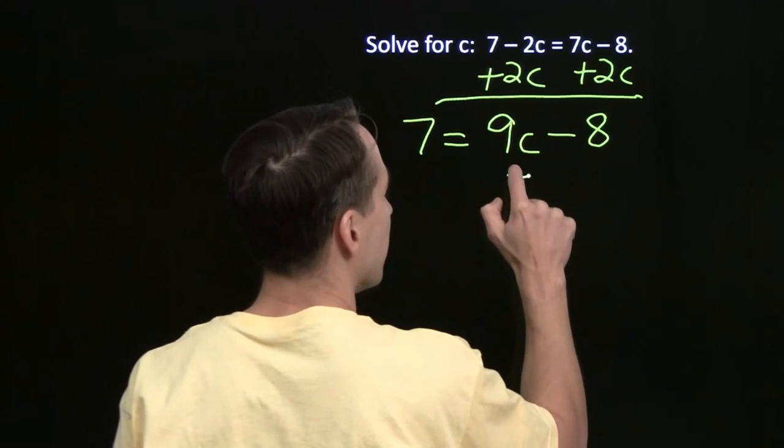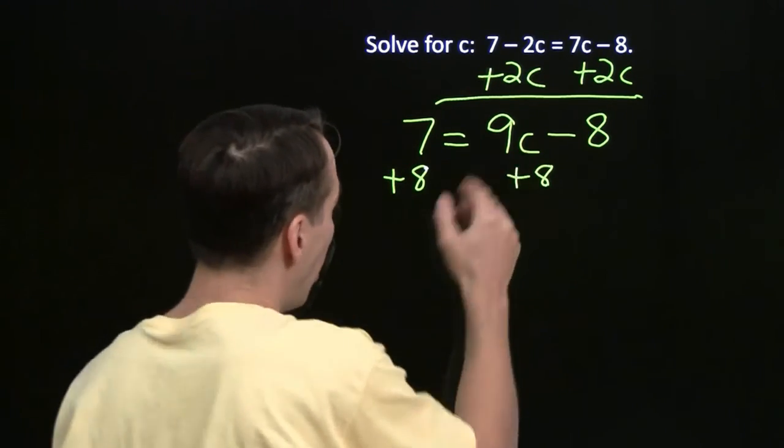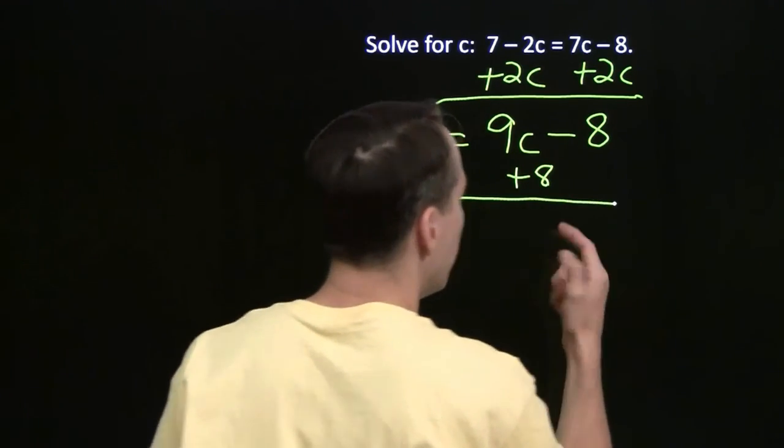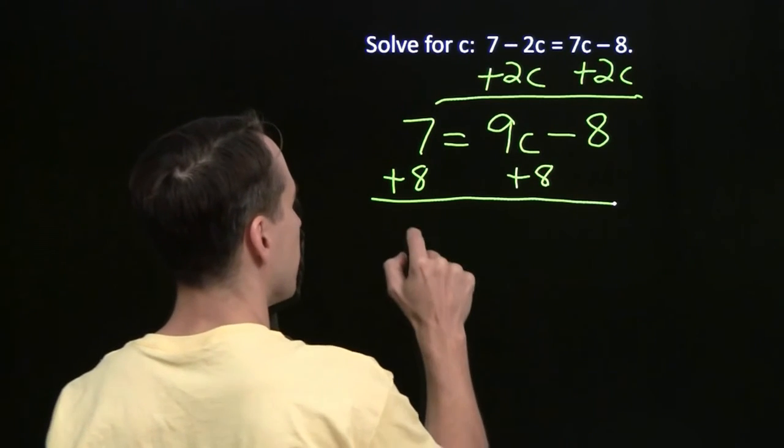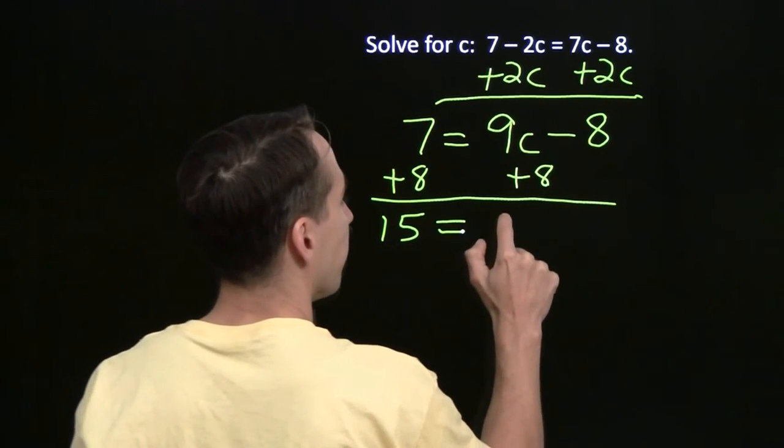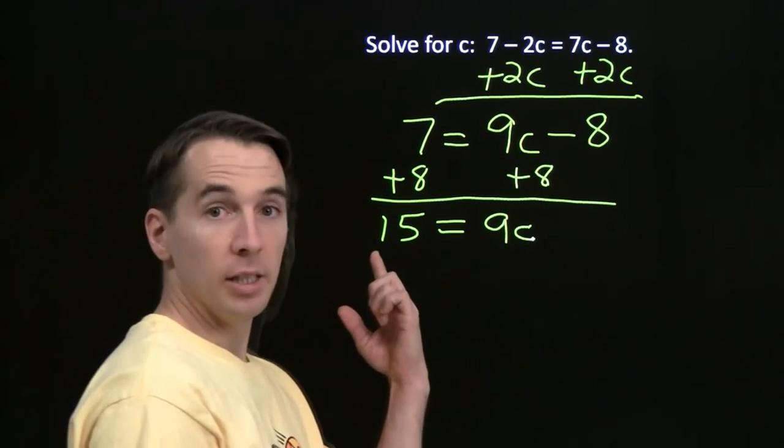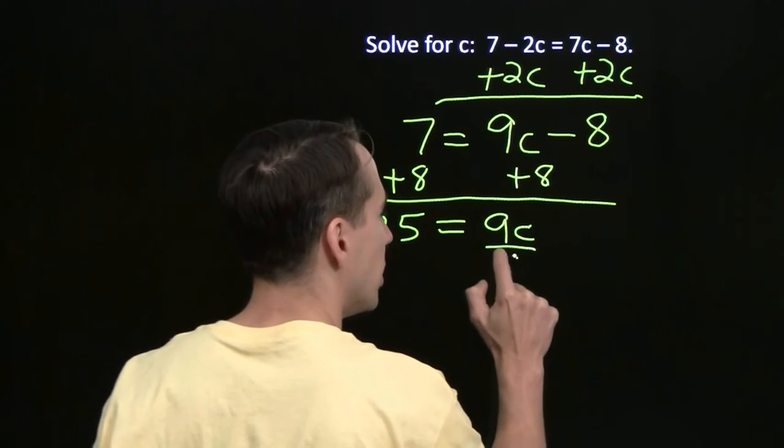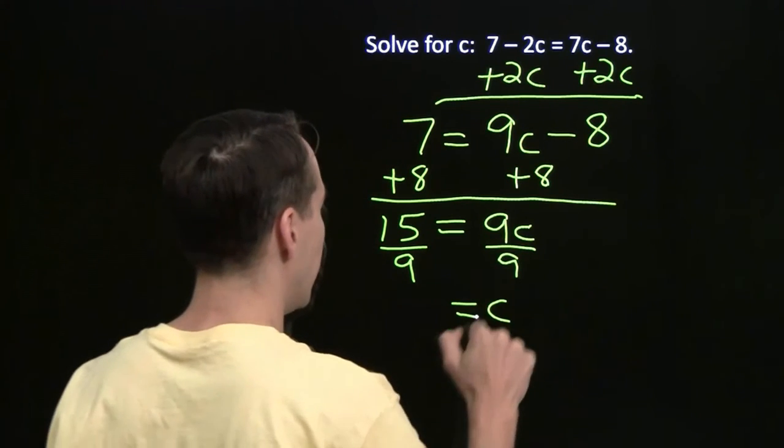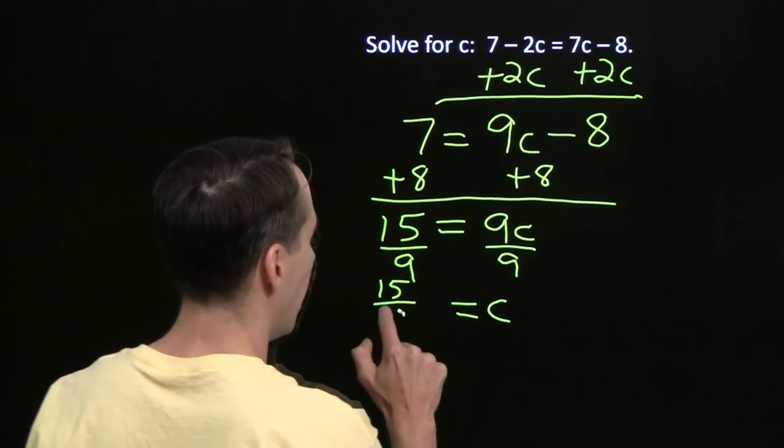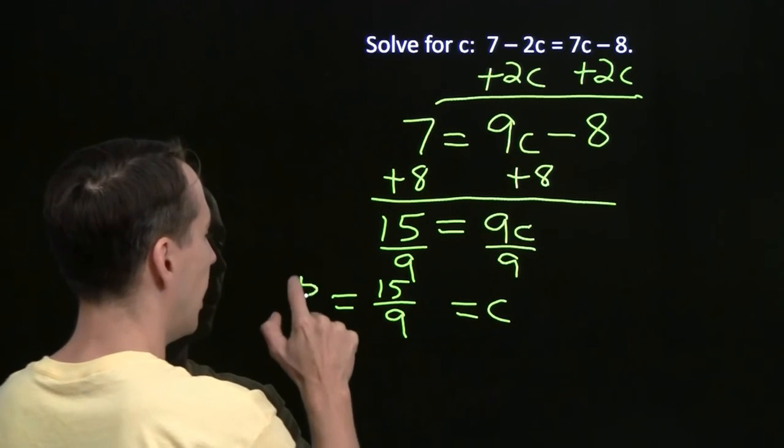We get the 9c all by itself by adding 8. And once again, all we're doing is we're trying to get the variable all by itself. And we know that adding 8 is going to be easier than starting off by dividing by 9, because dividing by 9 will give us a bunch of fractions. And we're left with 15 minus 8 and plus 8. They cancel. We have 9 times c equals 15, and we know how to handle this equation. We just divide both sides by 9. The 9s over here cancel, and we have c equals 15 over 9. And of course, we can simplify 15 over 9 as 5 thirds.